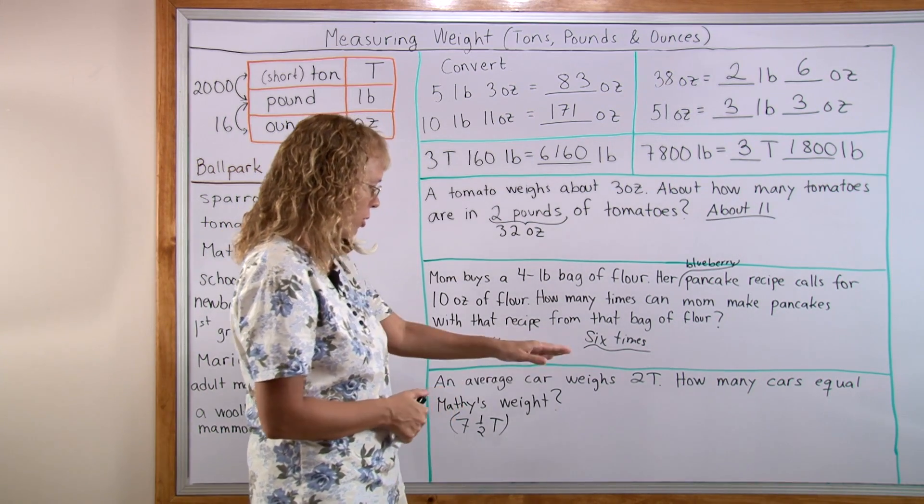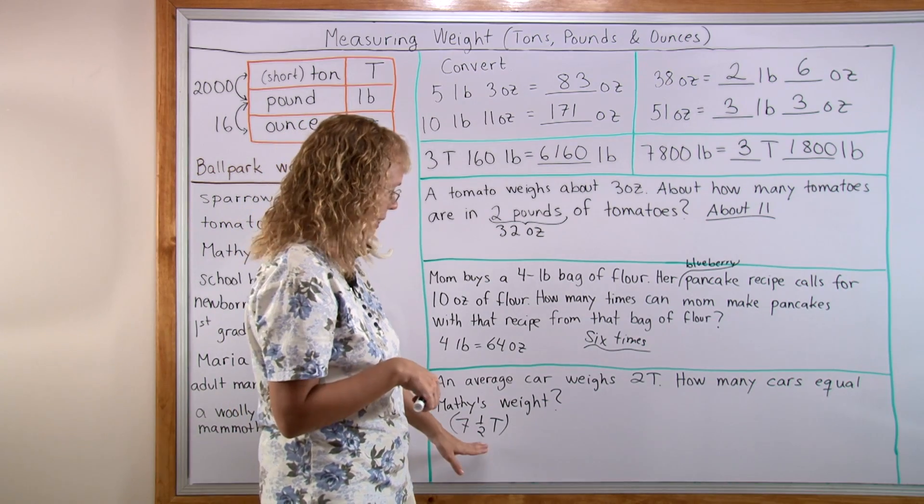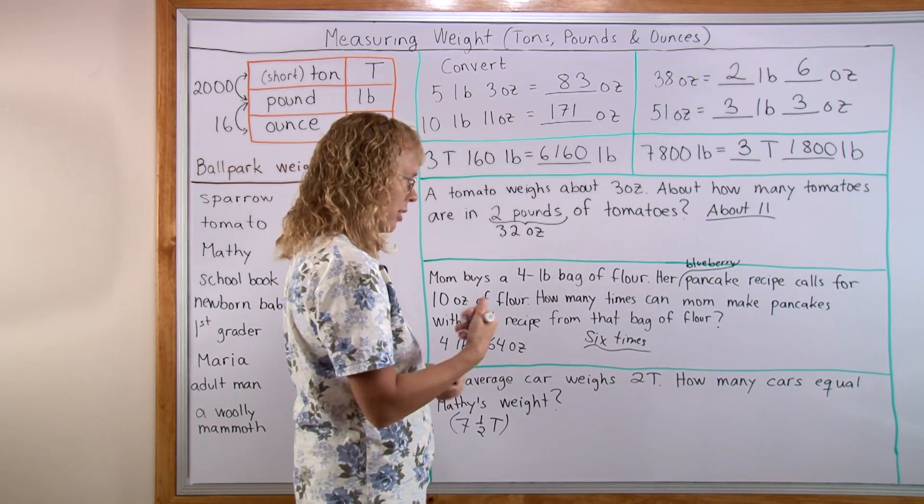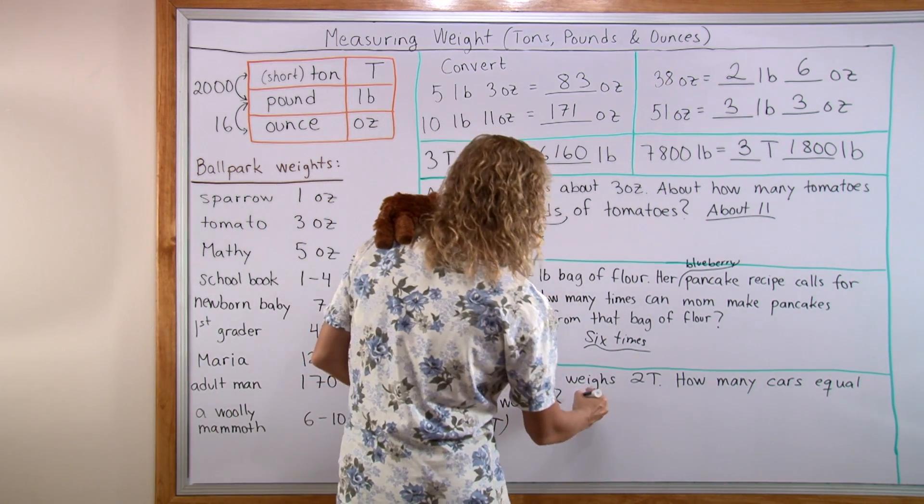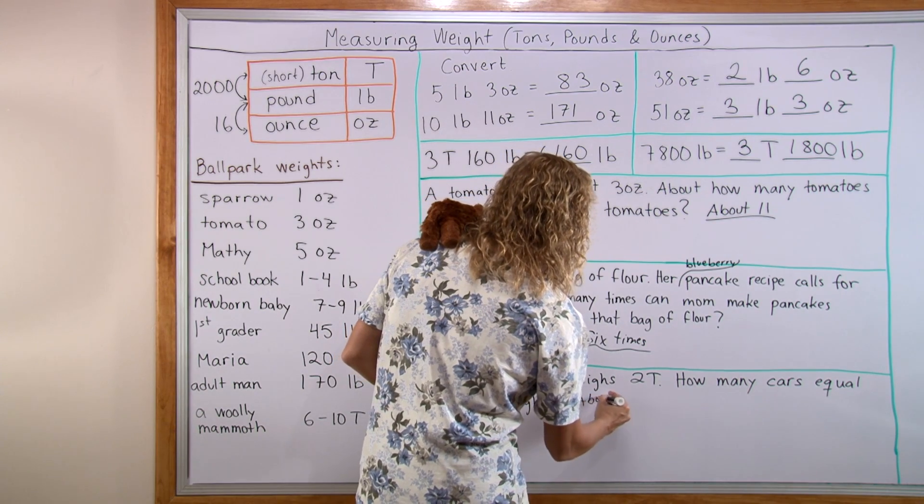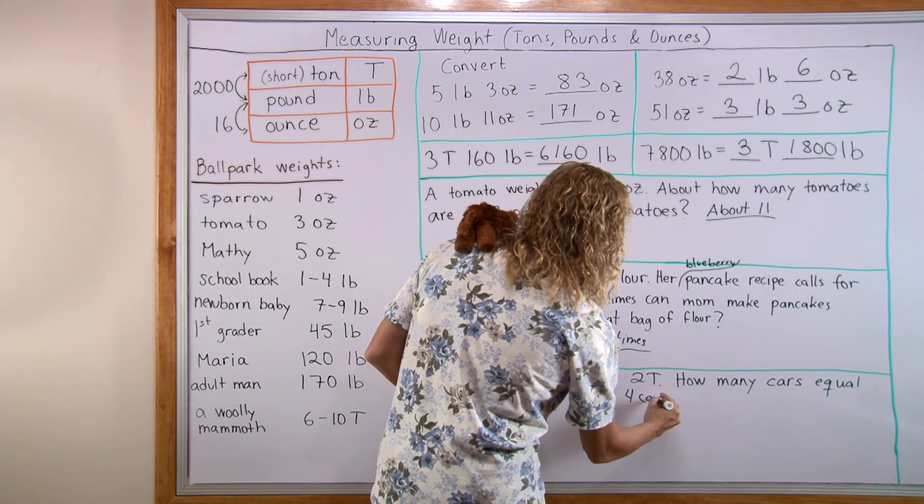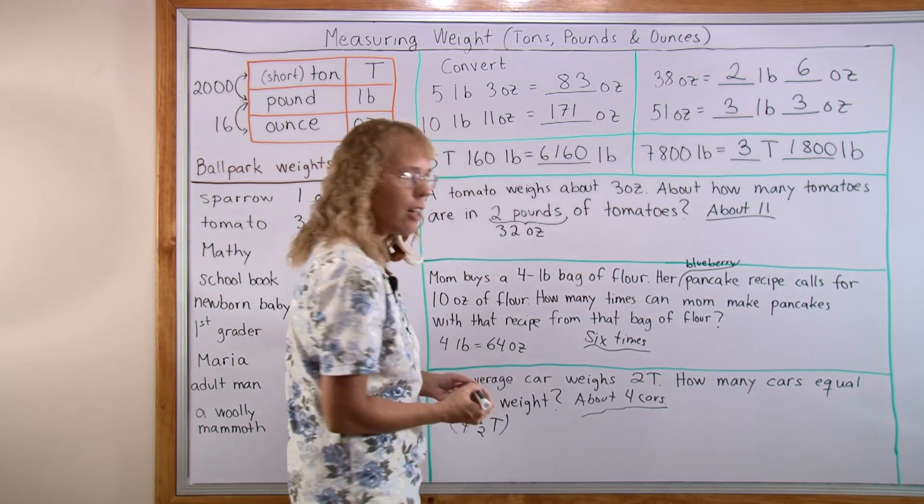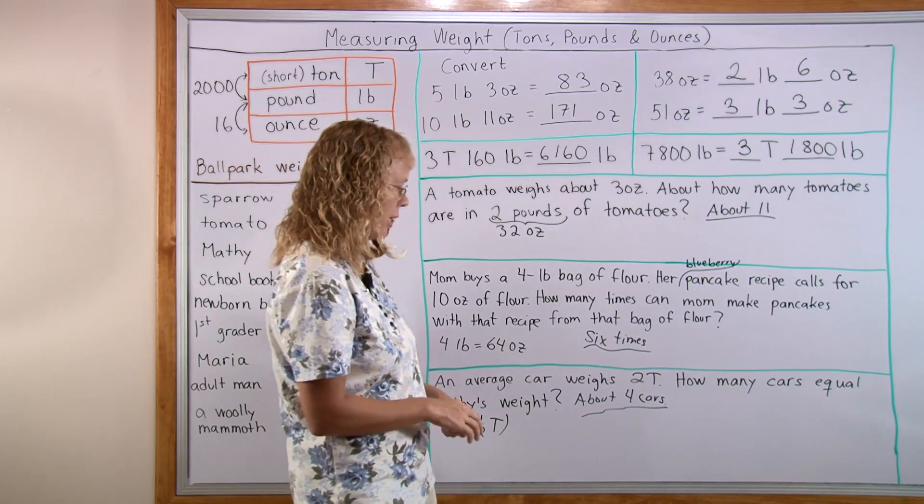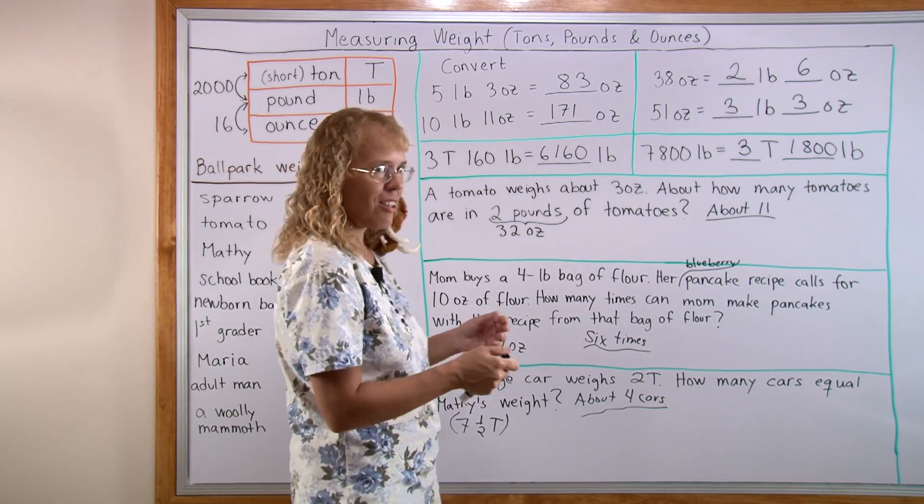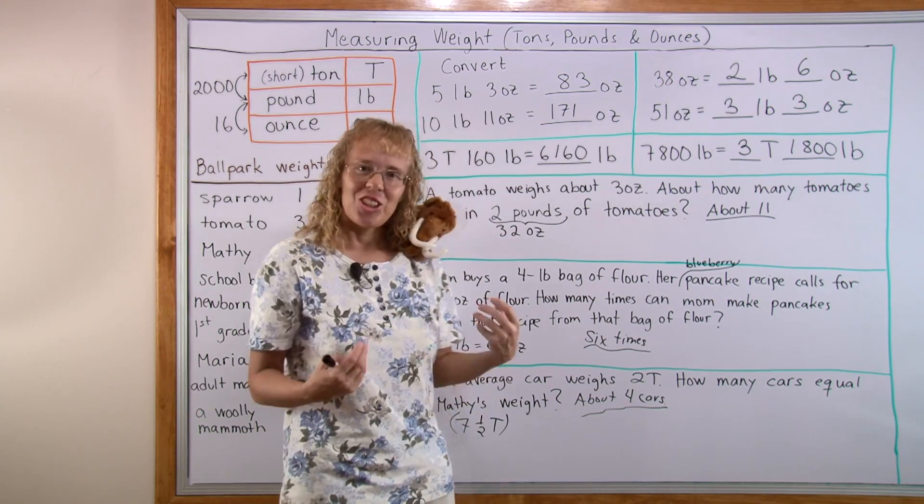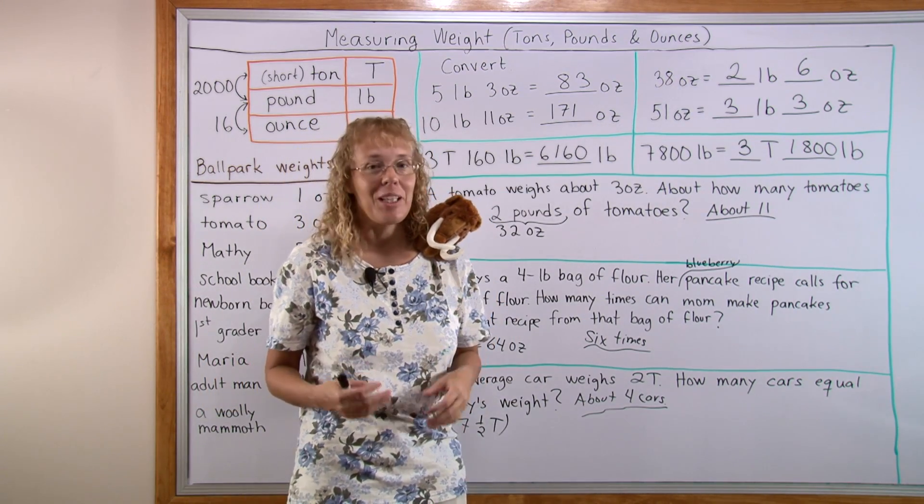2 tons times 4 would be 8 tons, so about 4 cars. 3 cars would only be 6 tons, which isn't quite enough. So 4 cars equals a woolly mammoth. That shows you how heavy, how massive these mammoths really used to be.